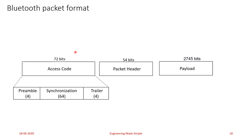Each Bluetooth packet begins with a 72-bit access code derived from the master and unique for each channel. Every packet exchanged on the channel is preceded by this access code. Recipients on the piconet compare incoming signals with the access code — if it does not match, the received packet is discarded. The access code is also used for synchronization purposes and is robust towards interference. Through this packet format, two or several piconets can communicate and form a scatternet.